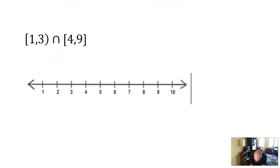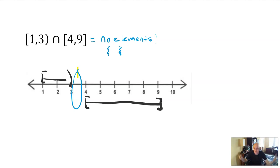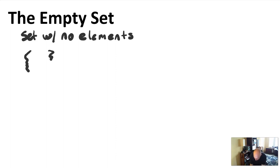Let's do one more. The interval [1, 3) intersected with [4, 9] — the other one barely had an intersection, and now I can see there's no overlap. There's a big space in between. So this has no elements. A set with no elements — you could write it as just a set of empty braces. That is called the empty set. The empty set is the set with nothing, no elements. You can write it as a pair of braces with nothing inside, or it is sometimes written as a zero with a slash through it.